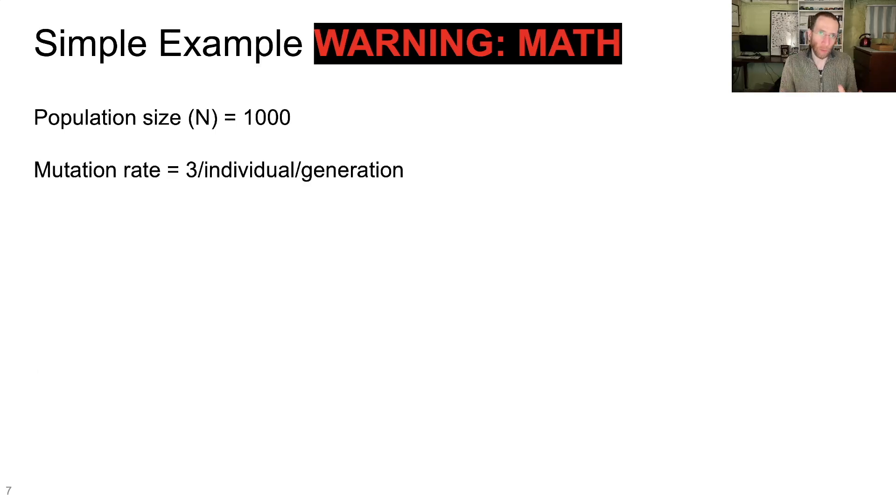Now we're going to illustrate this with a simple example because I want everybody to understand exactly what's going on here before we illustrate the problem. Warning, there is math on this slide, but don't worry, we're going to keep it very simple. So I want you to consider a population of 1,000. So N equals 1,000, capital N, that just means population size.